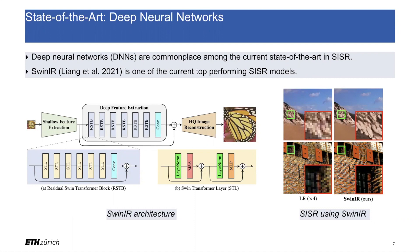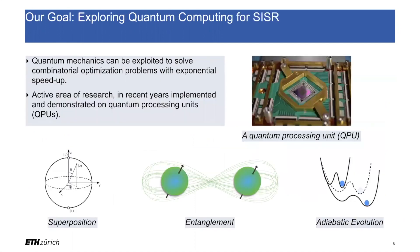Currently, commonplace among the state-of-the-art in super-resolution are deep neural network models. SWIN IR is an example of a current top-performing SISR model, with its architecture based on sliding window transformers. Given the proven performance of deep neural networks in super-resolution, our goal in this work is not to argue against this prevailing paradigm, but rather to undertake an early exploration of applying quantum computing to super-resolution.